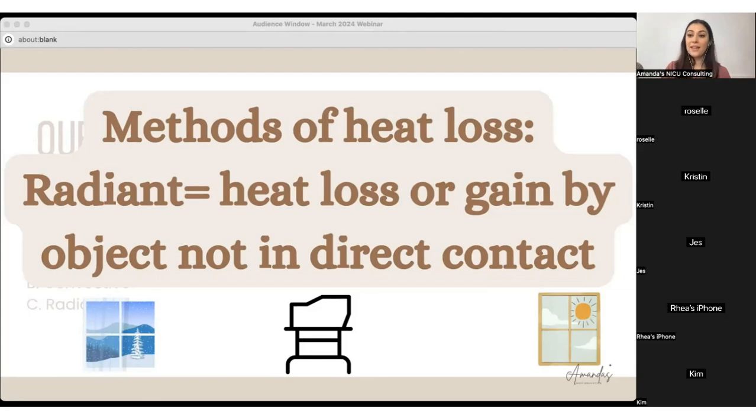So our beds have double walls to protect our babies from radiant heat loss, because if there's only a single wall, they can lose heat from the temperature in the room or being next to a window, things like that. So that's radiant heat loss.